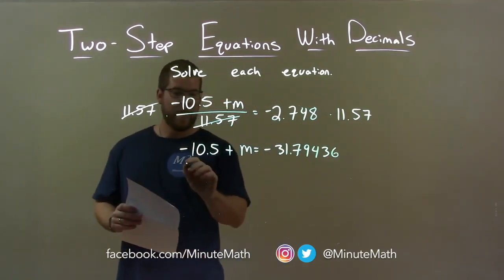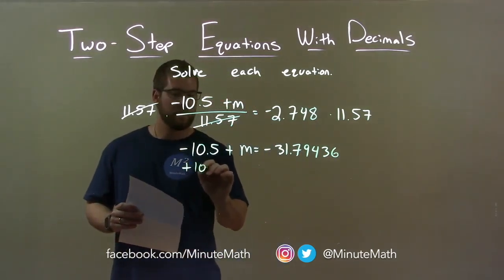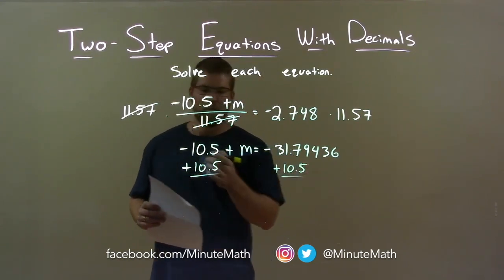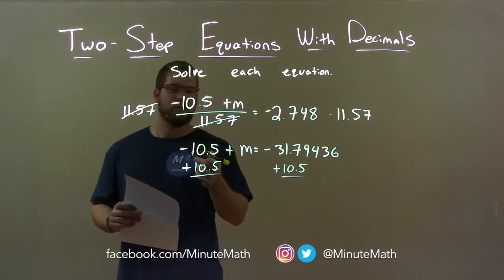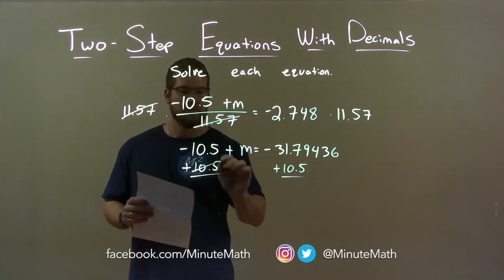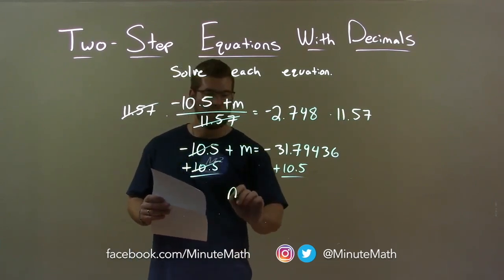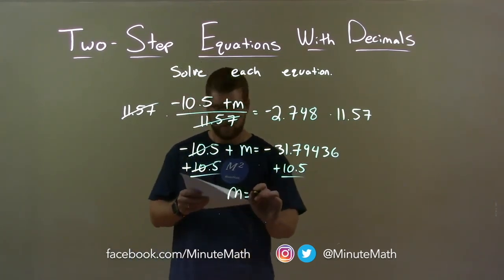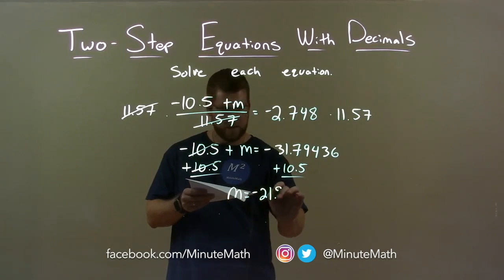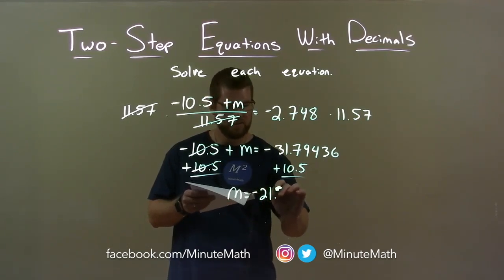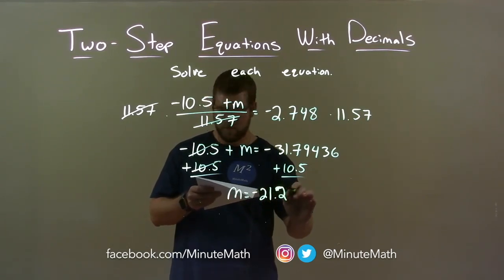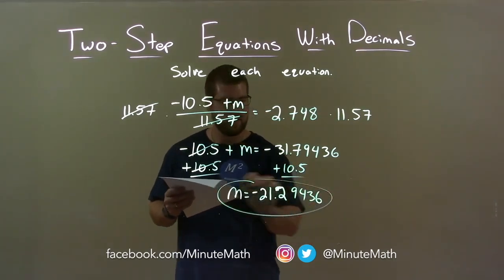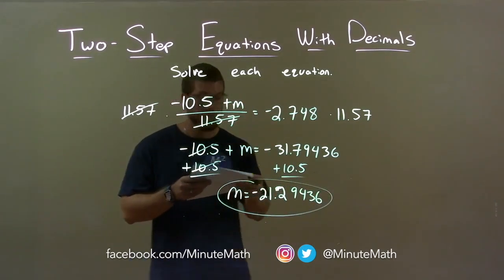Now all I have to do is add 10.5 to both sides. A negative 10.5 — the opposite of that is adding 10.5. The 10.5 cancels, leaving M by itself on the left. On the right, my final answer is negative 21.29436.